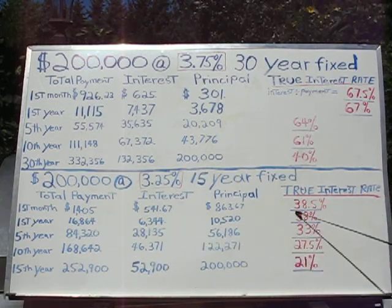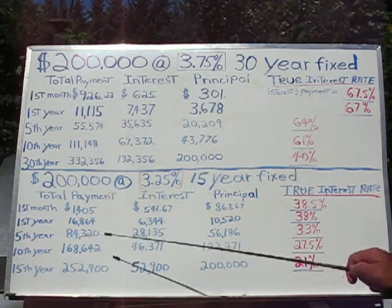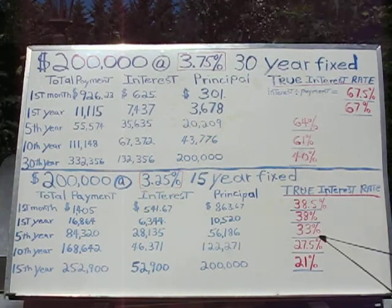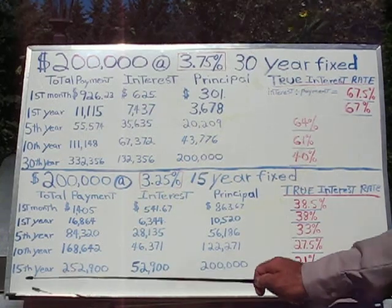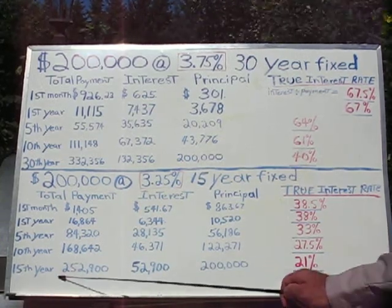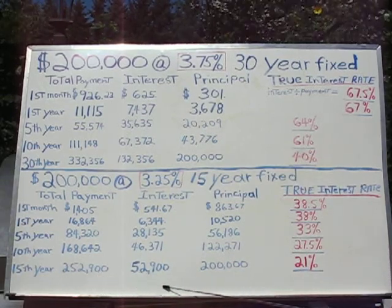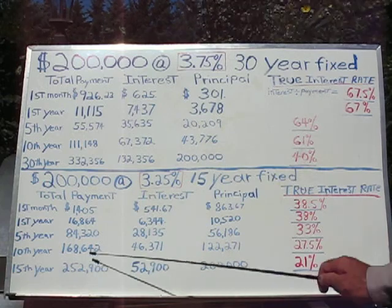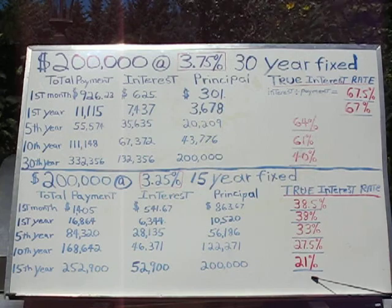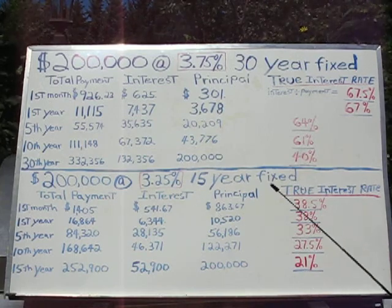At year five, you've ended up paying $84,000 in payments, with $28,000 in interest — a total true interest rate of 33%. Take it all the way down to 15 years: you've paid the loan off, having paid out about $253,000, with $53,000 in interest. Divide the interest by the payment, and you've really paid an average true interest rate of 21% — again, nowhere near the quoted rate of 3.25%.